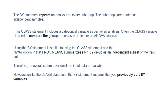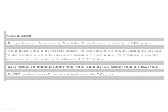Unlike the CLASS statement, if you are using the BY statement, the data set must be pre-sorted in the BY variable order. The input data must be sorted as per the BY variables before using the BY statement. BY groups are reported in separate tables, whereas CLASS variables appear in a single table. If you want to split your report to each page, the BY statement is used; with CLASS, all information comes into one page. Also, PROC MEANS is more efficient at treating BY groups than CLASS groups.